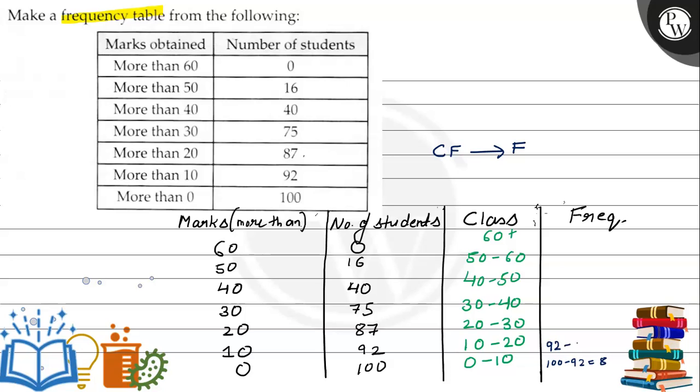Similarly, 92 minus 87 will give us 5. Similarly, 87 minus 75 will give us 12. Similarly, 75 minus 40 will give us 35. 40 minus 16 will give us 24. 16 minus 0 will give us 16.